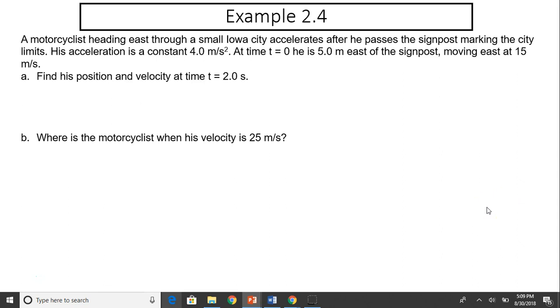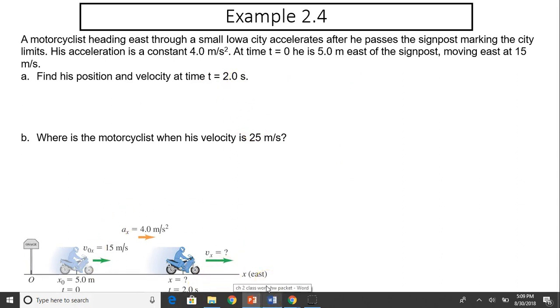Let's take a look at an example. A motorcyclist heading east through a small Iowa city accelerates after he passes the signpost marking the city limits. His acceleration is a constant 4 meters per second squared. At time t equals 0, he is 5 meters east of the signpost, moving east at 50 meters per second. Find his position and velocity at time t equals 2 seconds. Here is a diagram. A diagram helps us understand the situation better. So initial position, initial speed, acceleration, and the time of 2 seconds. What is his position and velocity?